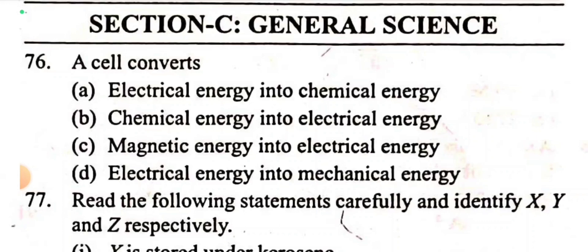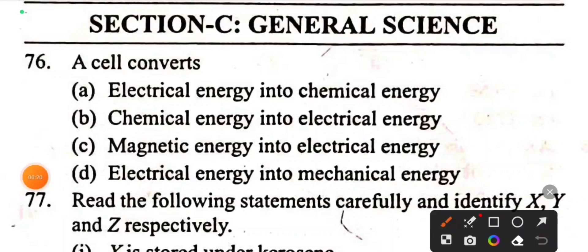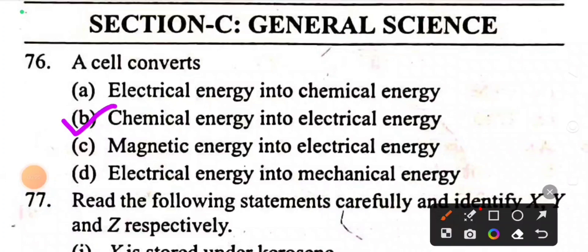Question 76: A cell converts chemical energy into electrical energy.